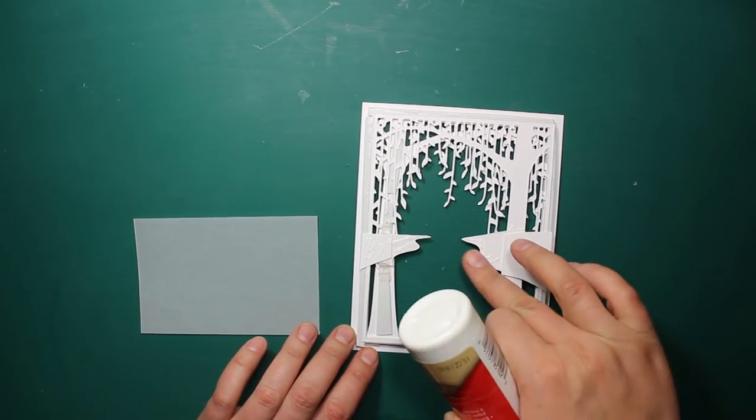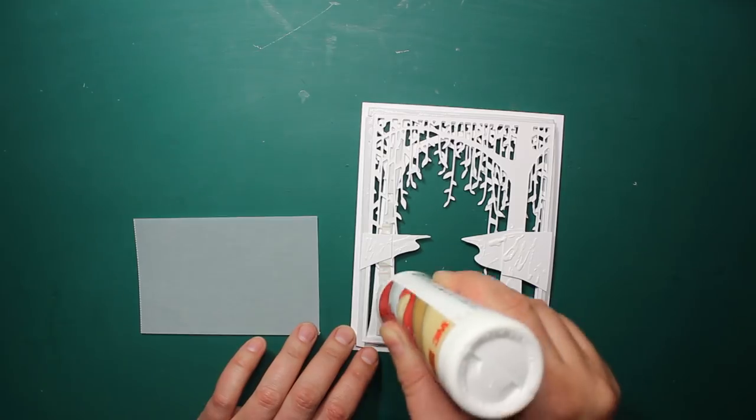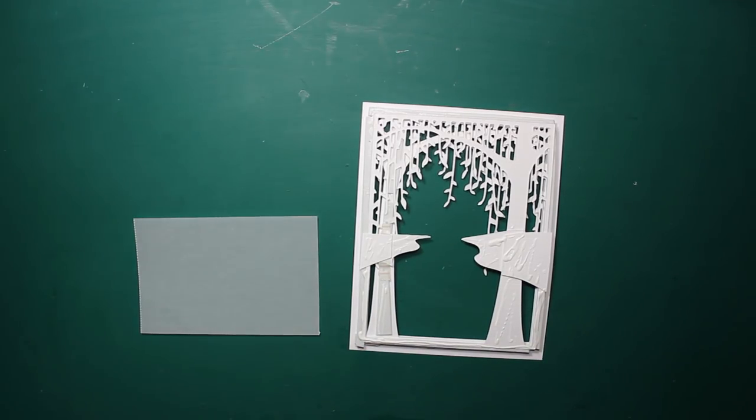Now I am applying the glue again at the wrong side and that is to stick this strip of vellum that is going to be the water.